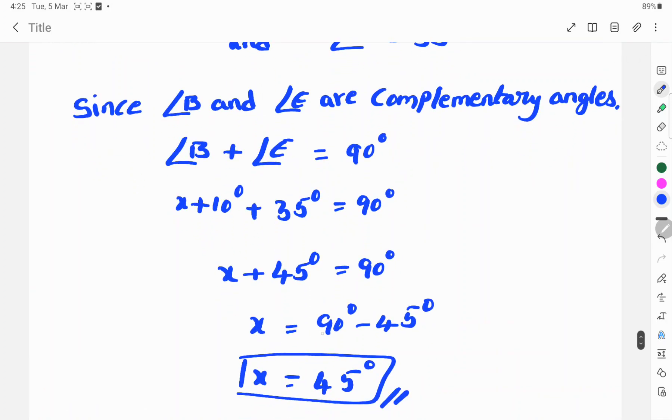So x equals 90 degrees. This positive value is changed to the right hand side; this positive changes to negative. So 90 degrees minus 45 degrees. 90 minus 45 is 45 degrees.